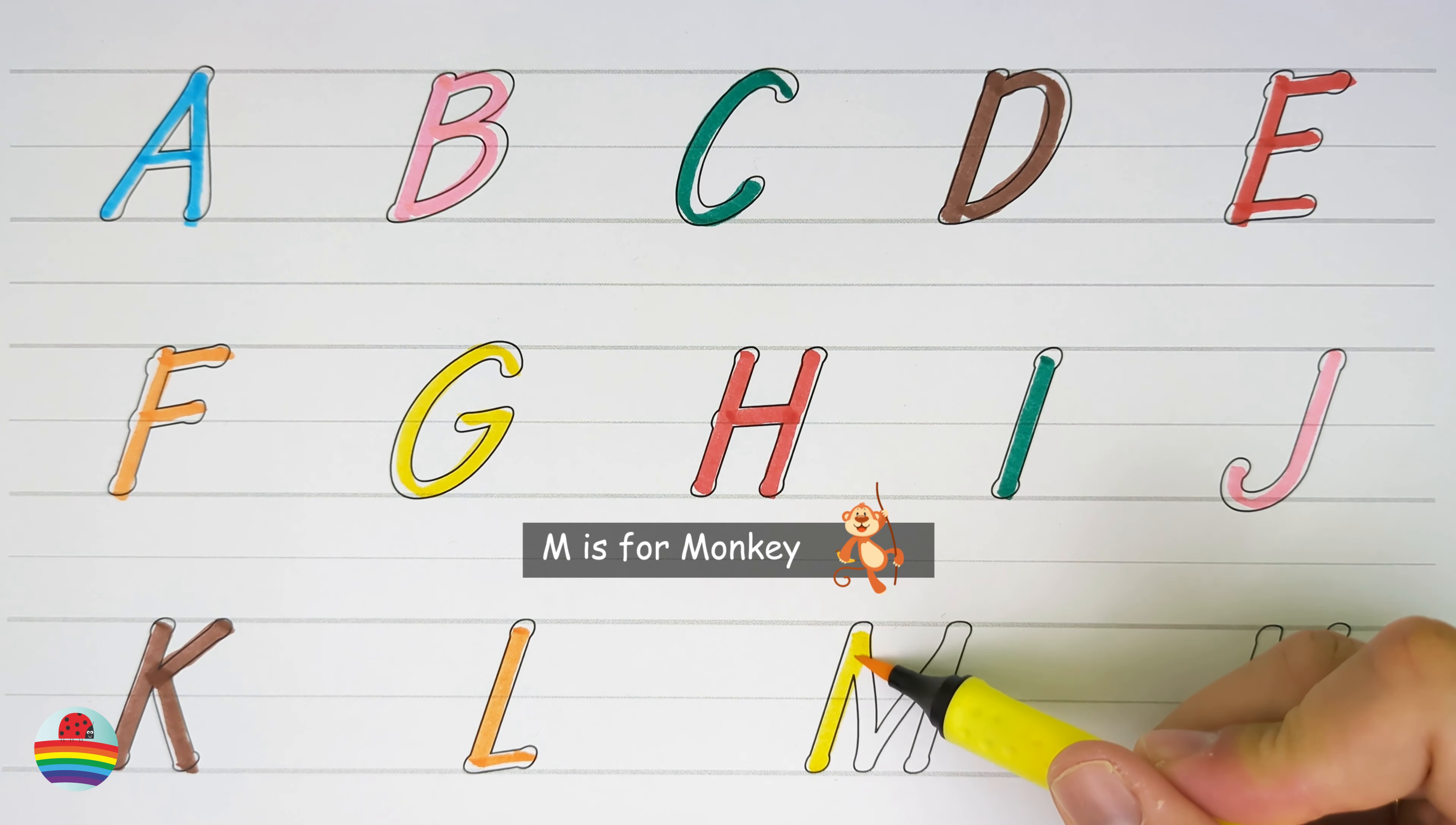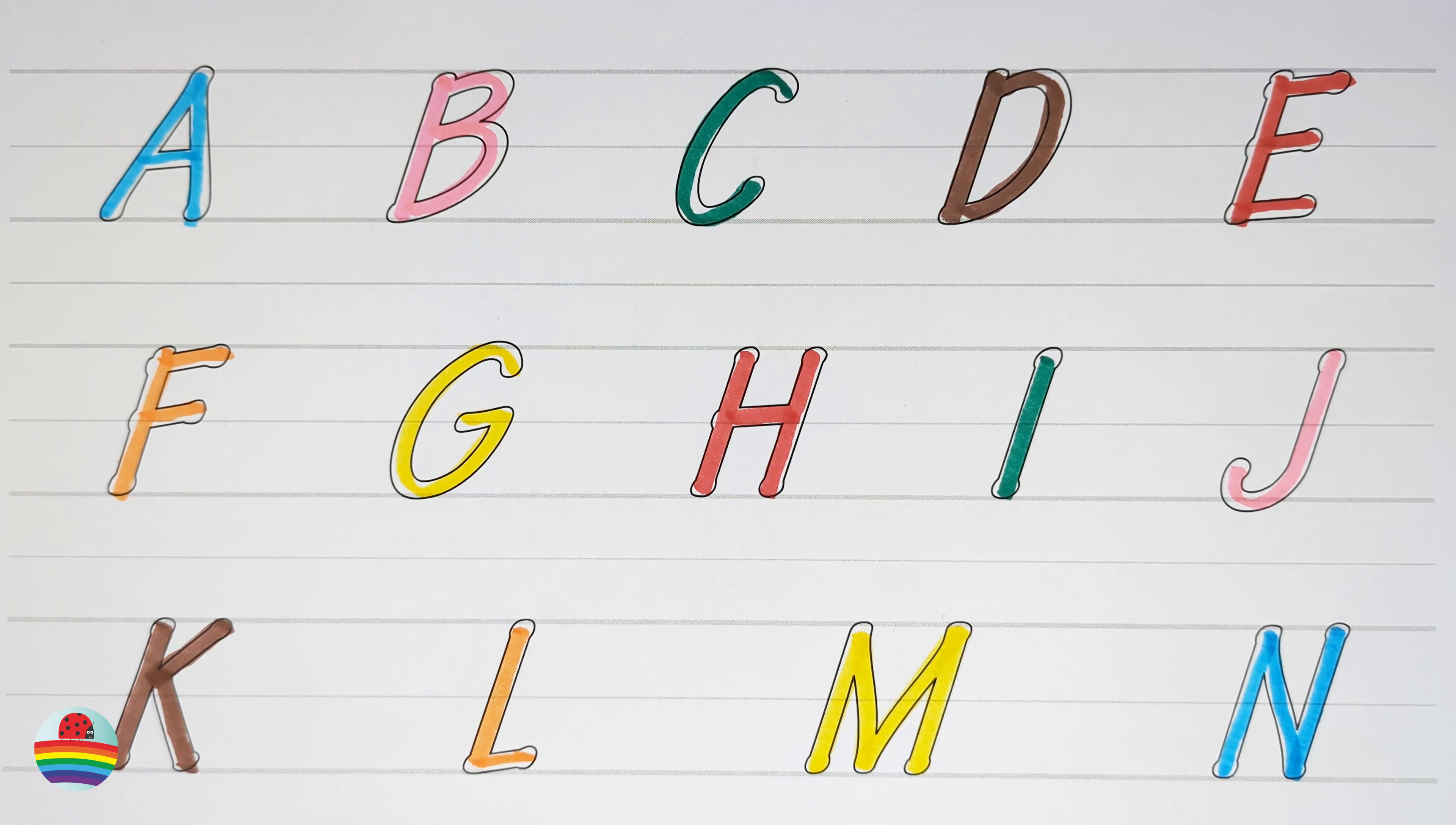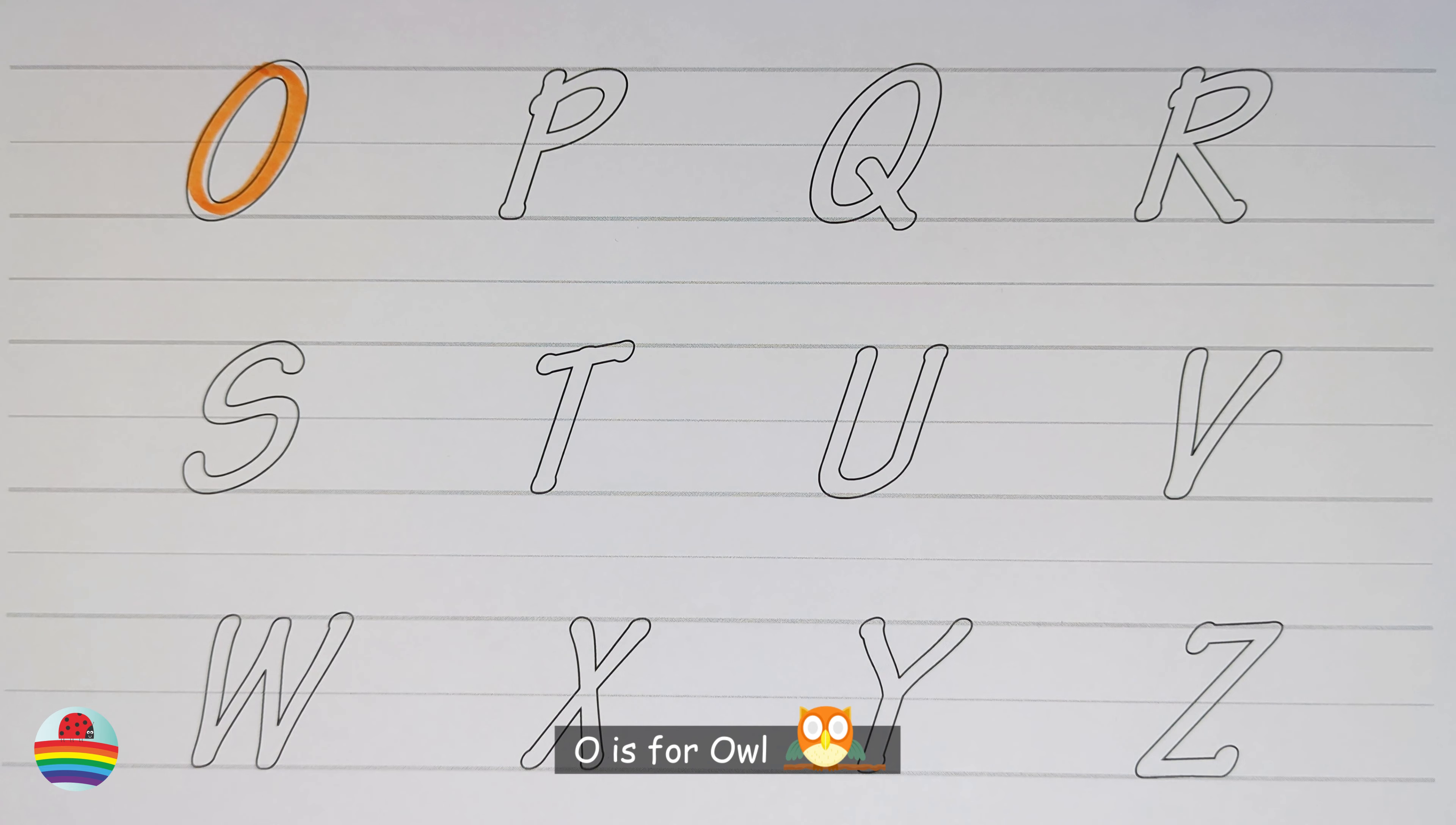M. M is for Monkey. N. N is for Nightingale. O. O is for Owl.